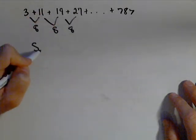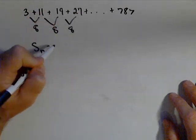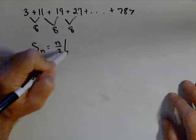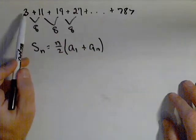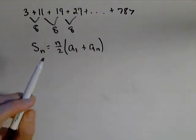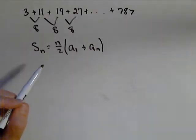Now to sum up a finite arithmetic series, it's the number of terms over two times the first term plus the last term. So if we look at what we have, we have the first term, we have the last term, so we're in good shape there. We don't have the number of terms.